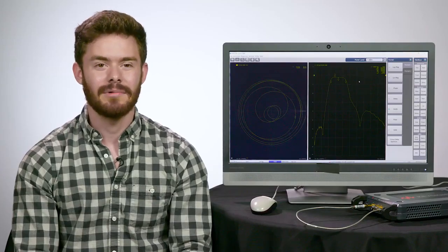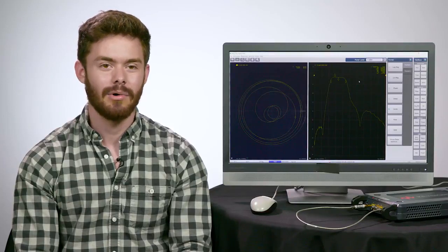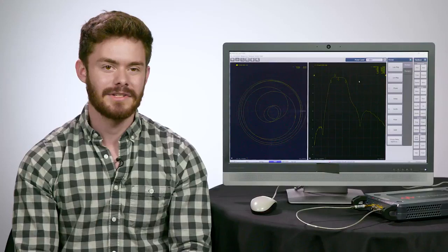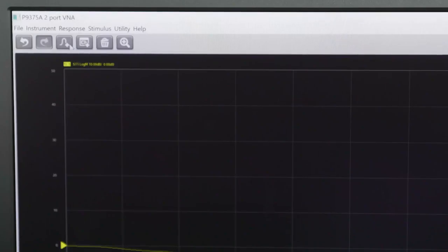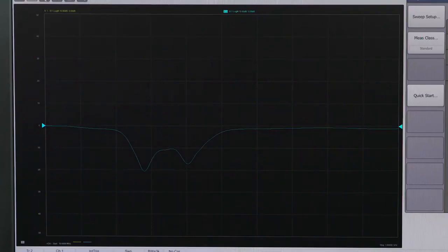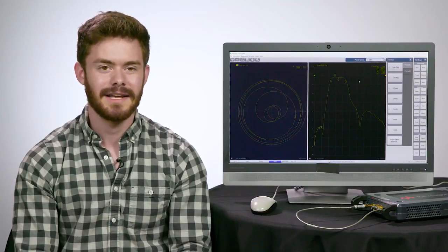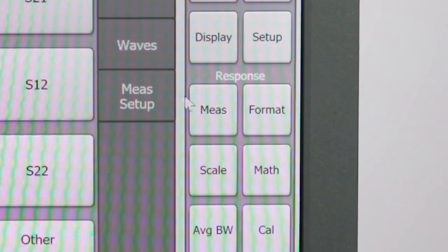Let's take a look at the S21 parameter, which is the transmission between port 1 and 2. We'll do basic data analysis of our DUT, which is a bandpass filter. Add a new trace by clicking the Add Trace icon from the top toolbar. The S11 trace will probably pop up on the screen as a blue trace. We're going to change the parameter of this trace to S21 instead. Select Measure and S21.